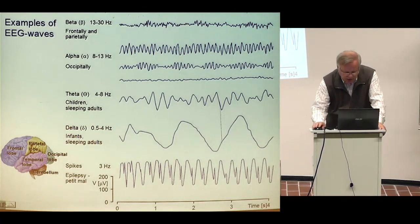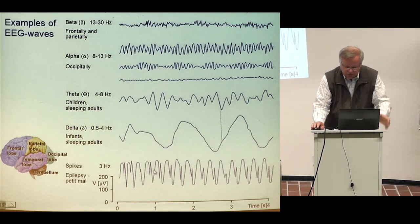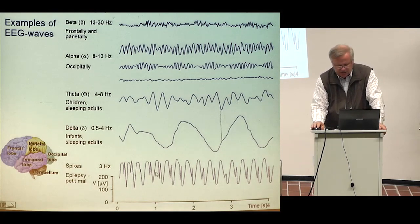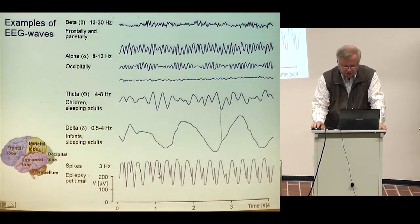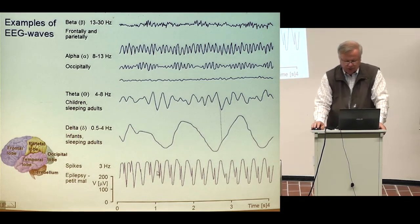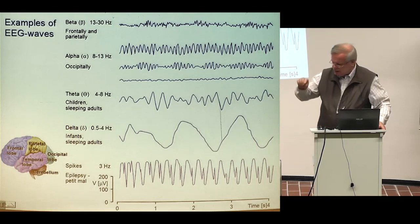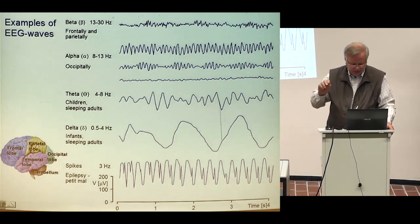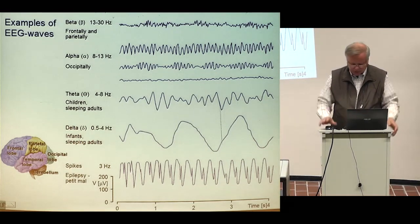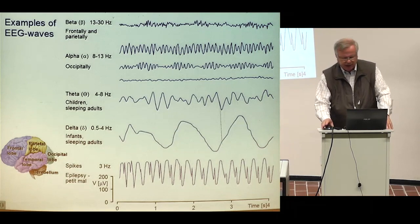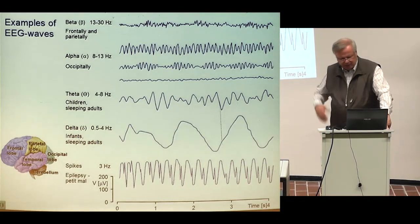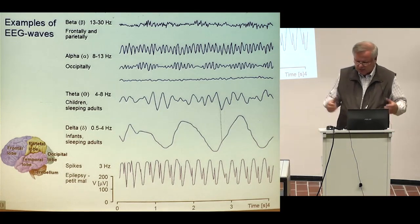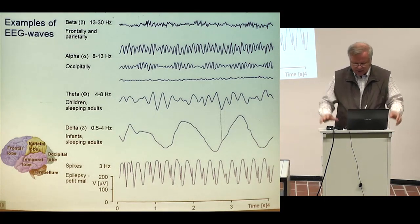Here is an example of epileptic spikes. For some reason, in some focus of the brain there is strong activity which spreads throughout the brain. Due to the epileptic activity, the person loses consciousness and has muscular activity and so on.